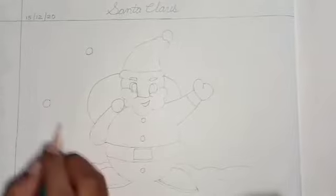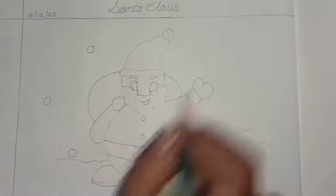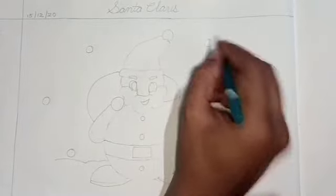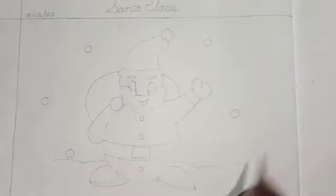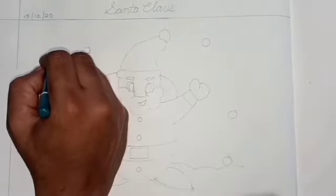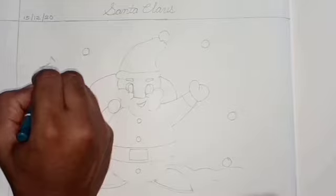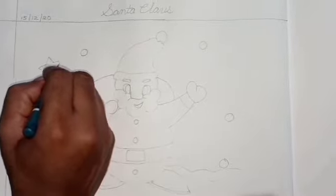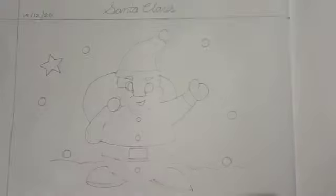We will make small circles here like this. Then we will make stars here like this.